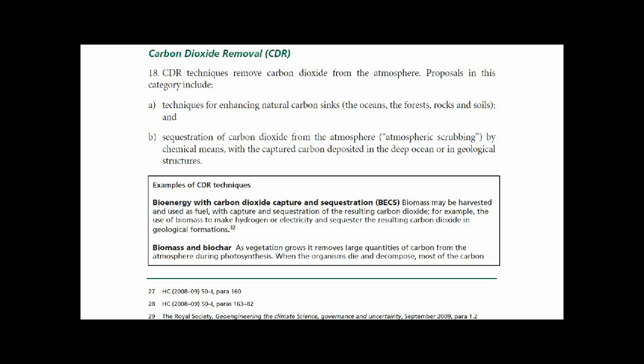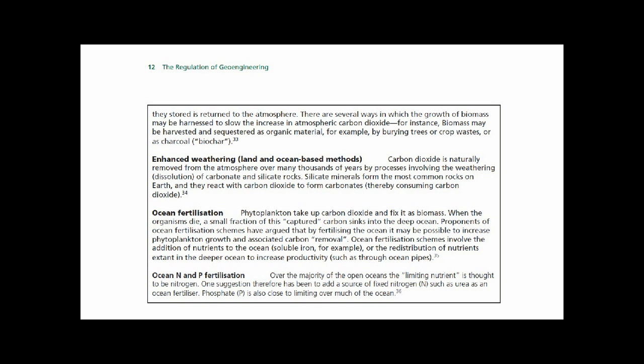Afforestation and vegetation growth: vegetation removes large quantities of carbon from the atmosphere during photosynthesis. When the organisms die and decompose, most of the carbon they stored is returned to the atmosphere. There are several ways in which the growth of biomass may be harnessed to slow the increase in atmospheric carbon dioxide. For instance, biomass may be harvested and sequestered as organic material — for example, by burying trees or crop wastes, or as charcoal, known as biochar.